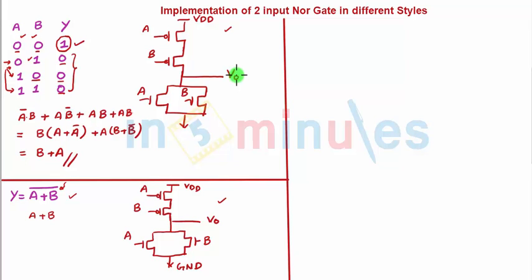So we saw that with the truth table also we got exactly the same circuit which I have taught you to be implemented using the shortcut trick. So this completes the static style of implementation. Let's go ahead and do this implementation in pseudo NMOS style.